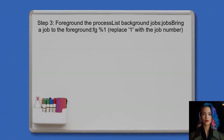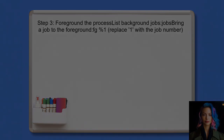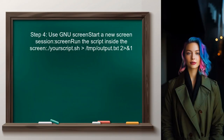If you want to bring the background process to the foreground later, use the jobs command to list all background jobs. Then use the fg command followed by the job number. To send the backgrounded process into a new screen session, first start a new screen session, then run the script inside that session.